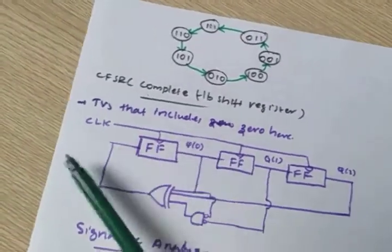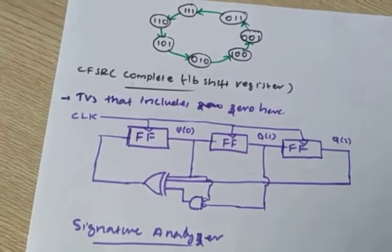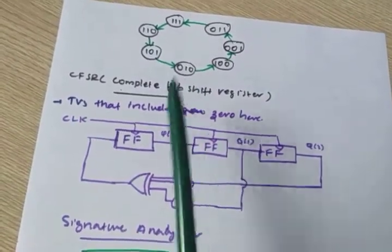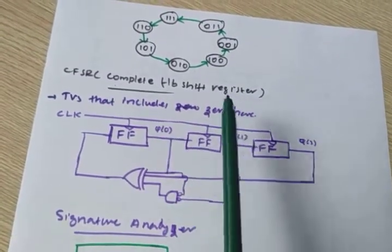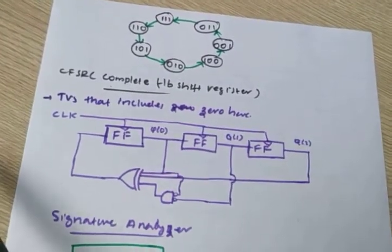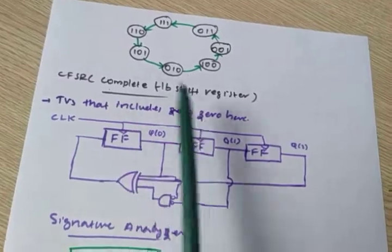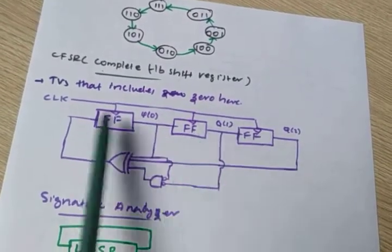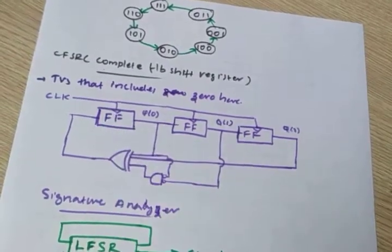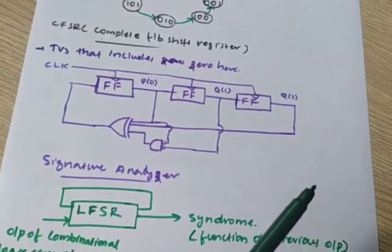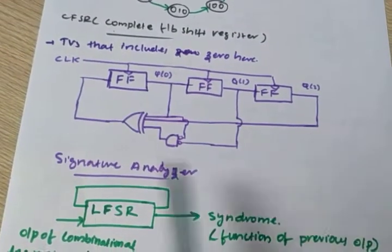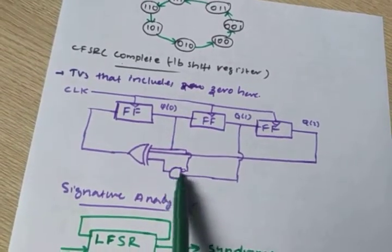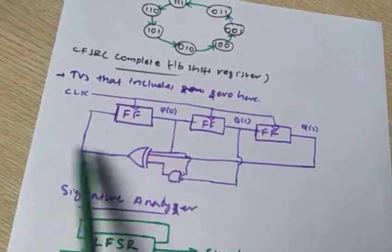CFSR stands for cellular feedback shift register. The difference from LFSR is that in CFSR the all-zeros condition can be handled. In LFSR the all-zeros seed is an invalid state, but CFSR is designed so that even an initial value of zero can be used and the circuit will still generate test patterns automatically.